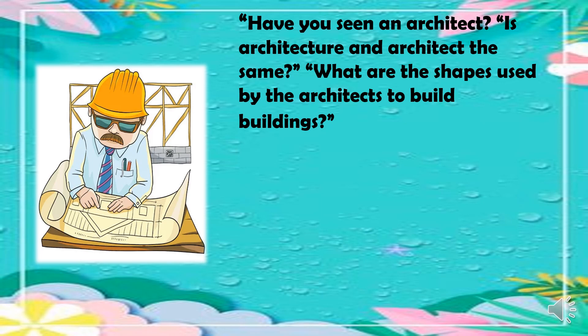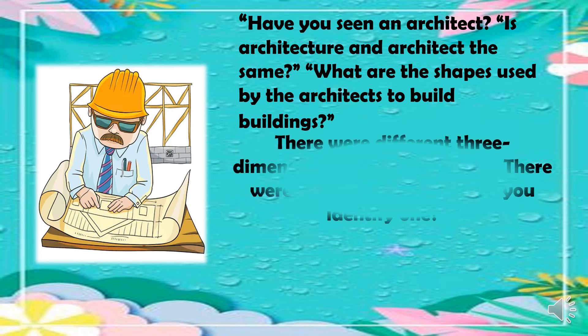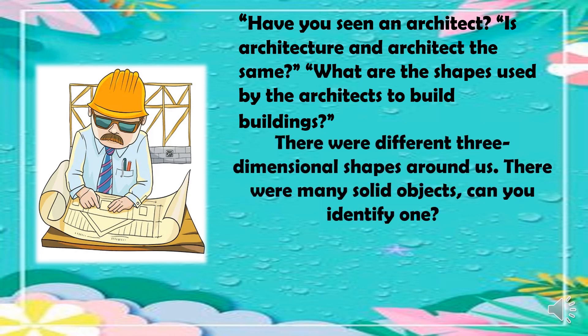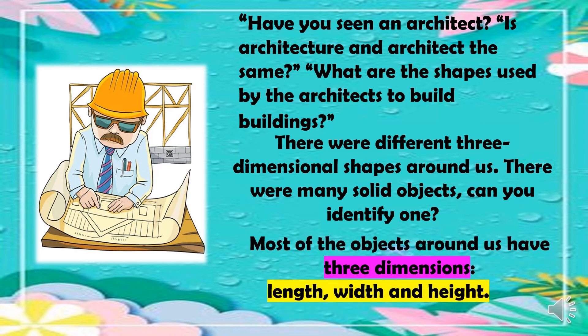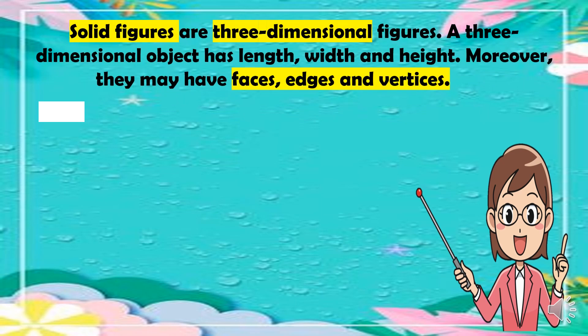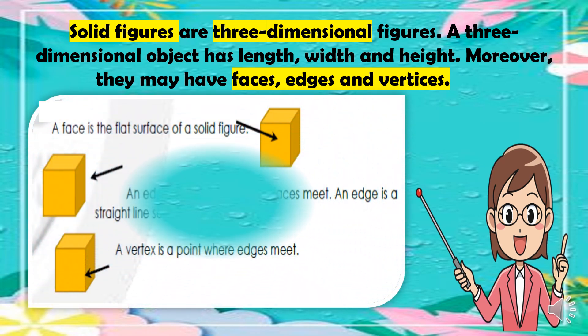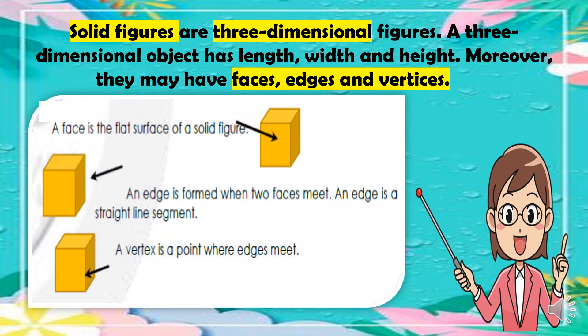We will find out as we discuss our lesson today. There are different 3-dimensional shapes around us. Most of the objects around us have 3 dimensions — we have the length, the width, and the height. Solid figures are 3-dimensional figures, and a 3-dimensional object has length, width, and height. Moreover, they may have faces, edges, and vertices.